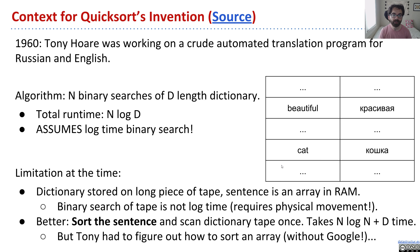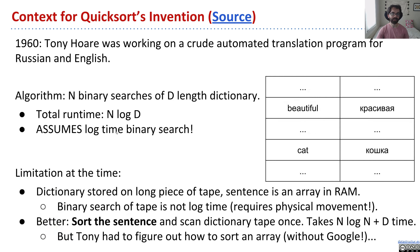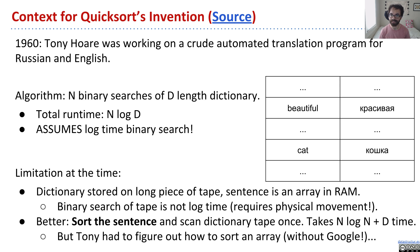That approach takes n log n time to sort the sentence, plus d to scan through the tape. The trick was that Tony had to figure out how to sort the sentence — in other words, turn 'the cat wore a beautiful hat' into 'a beautiful cat hat the wore.' At that time, he did not have Google or any resources to find a sort, so he tried to come up with something, anything, to sort a sentence. The first thing he came up with is equivalent to what is now known as bubble sort, a terrible sorting algorithm. And then the idea he came up with next turned out to be the fastest known sort, even to this day, over 50 years later.